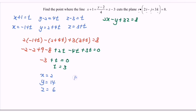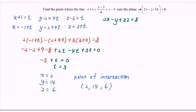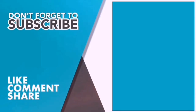The point of intersection is (2, 14, 6). That is the point where the line cuts the plane. If you are new here, kindly consider subscribing to this channel and share this video with your friends. Thank you so much for watching. Bye.